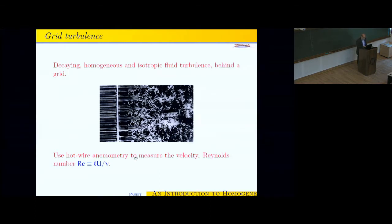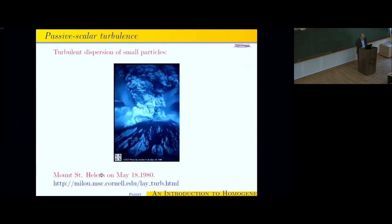And the dimensionless number which governs whether a fluid is turbulent or not is the Reynolds number Re, which is a typical length scale L, typical velocity scale U, divided by the kinematic viscosity nu.